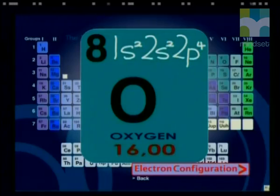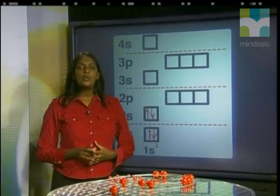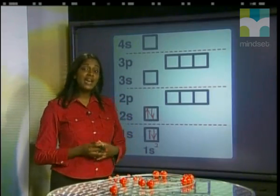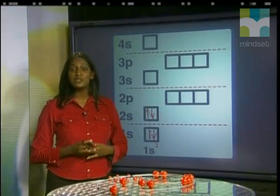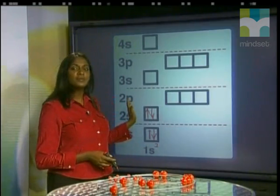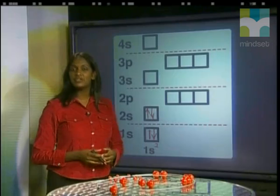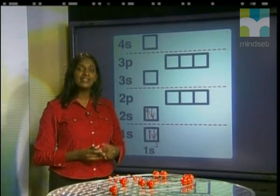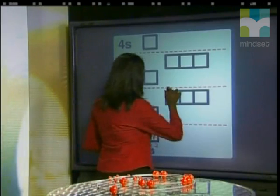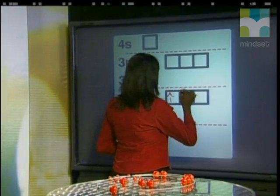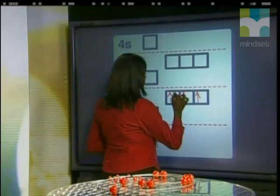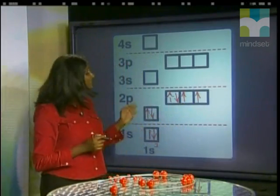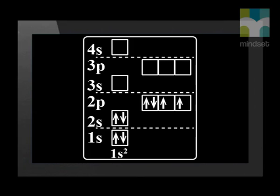What would the energy level diagram for oxygen look like? When we fill in the energy level diagram, we must take careful note of a special rule: each of the P-orbitals gets one electron first, and only then will the next electron be paired in the first P-orbital. So, oxygen has an energy level diagram with two unpaired electrons.